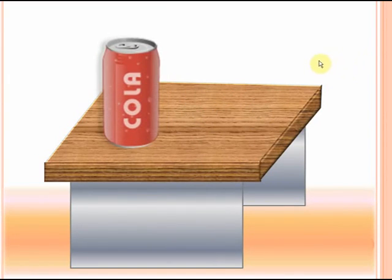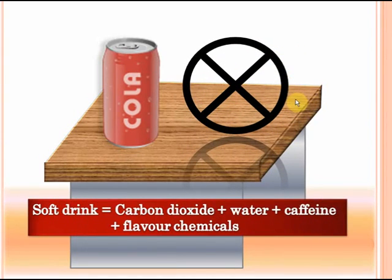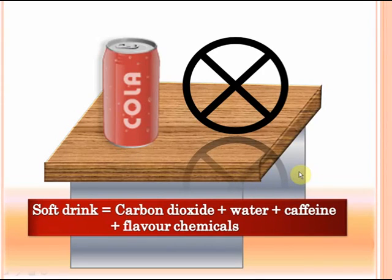Similarly, take your soft drink cans. Are soft drinks pure? They aren't. Using special physical processes, you can actually separate soft drinks into carbon dioxide, water, a substance called caffeine, and different flavor chemicals. As you can see, soft drinks do not contain the same kind of particles — carbon dioxide is a pure substance, water is a pure substance, but soft drinks contain different types of particles. So soft drinks can't be pure, and they can be broken down into these different substances by using physical processes.